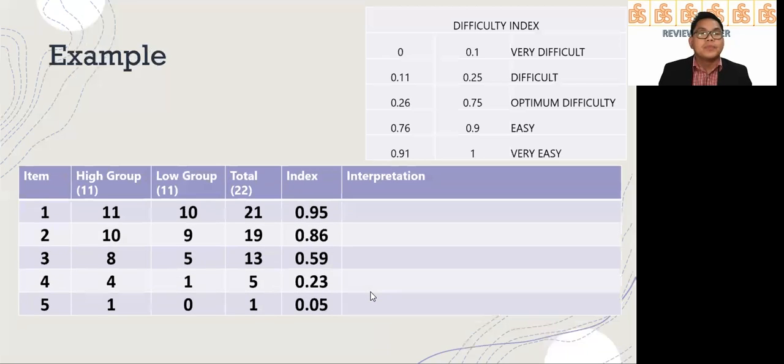Let's have a specific example. Consider this is the result of your first five items. Item 1 to 5, high group, let's say there are 11 members or 11 scores for the high group and 11 scores for the low group, and the total is 22. For the high group, out of 11, 11 got the correct answer. Now the question is 11 plus 10 is 21, 21 divided by 22 is 0.95. That is your index.